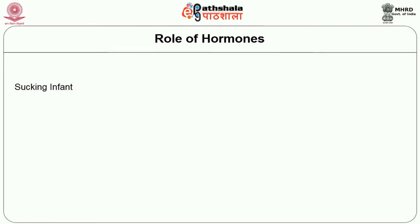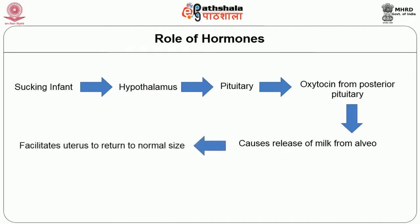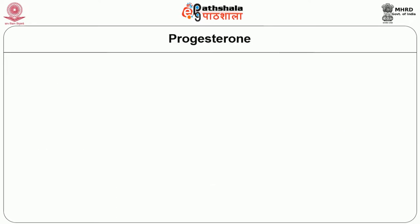The process is clearly explained in the figure: when the infant starts sucking, it stimulates the hypothalamus. The hypothalamus signals the pituitary to release oxytocin; oxytocin from the posterior pituitary is released, causing the release of milk from the alveoli, which also accelerates the uterus returning to normal size. Hence breastfeeding is helpful for the mother in making the uterus return to its normal size. The figure clearly explains the process of stimulation of milk production.